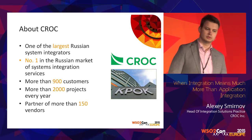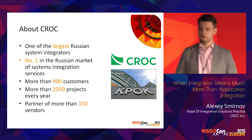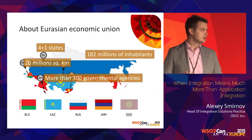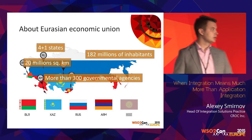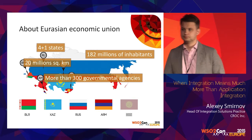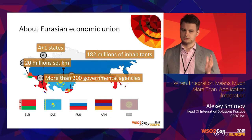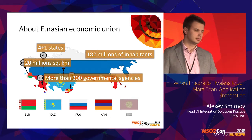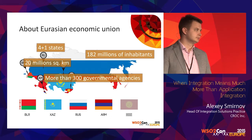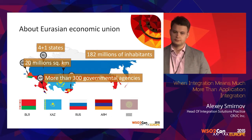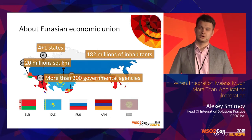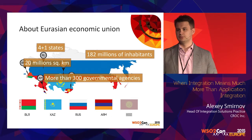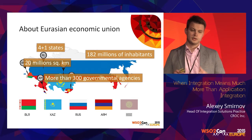One of our largest customers last year was the Eurasian Economic Union. Not so many of you may have heard about this union, but it exists and it's quite big. At the moment, this union consists of four states: Russia, Belarus, Kazakhstan, and Armenia, and Kyrgyzstan is going to join in a few months. It has about 200 million inhabitants and occupies about 20 million square kilometers.